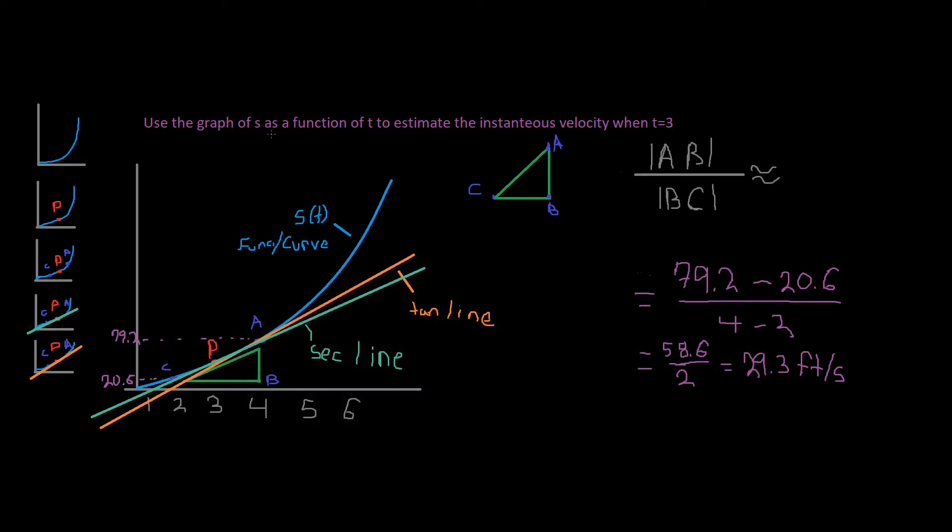Now the question is asking us to use this graph of S as a function of T to estimate the instantaneous velocity when T equals 3. So instantaneous velocity, that's the slope of the tangent line. We're given this curve, and we have this point P. Wherever T equals 3 is on the curve, that's where our point's going to be. We're given two different separate points, these points are known as the point Q.